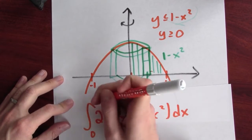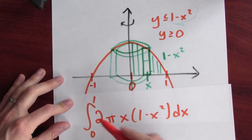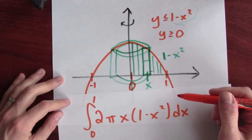So I'll write that here. x goes from 0 to 1. This integral will calculate the volume of my solid of revolution.